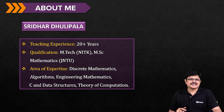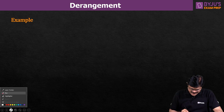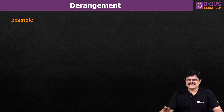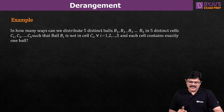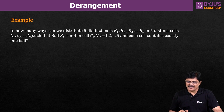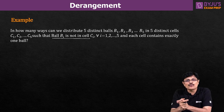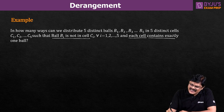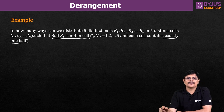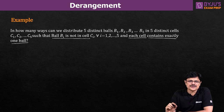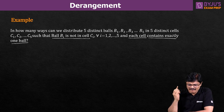So now let us start with the concept: derangement. Before giving you the idea of derangement, let us take one simple example. In how many ways can we distribute five distinct balls B1, B2, B3, B4, and B5 in five distinct cells C1, C2, C3, C4, and C5 such that ball Bi is not in cell Ci for i equal to 1 to 5, and each cell contains exactly one ball? Towards the end, I'll discuss the solution, but let us understand the problem properly.